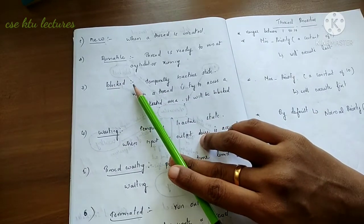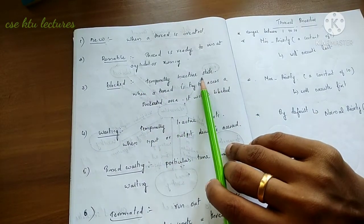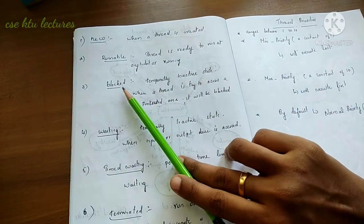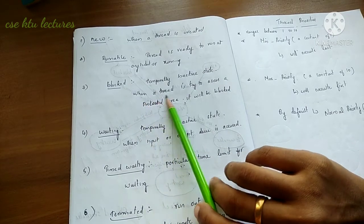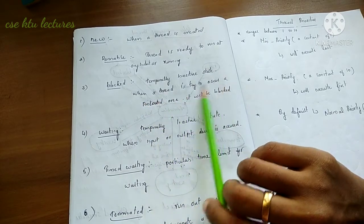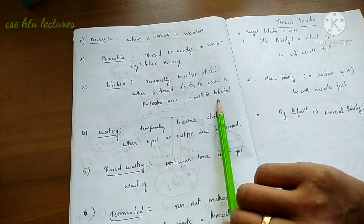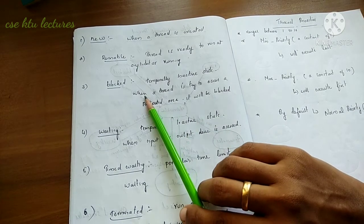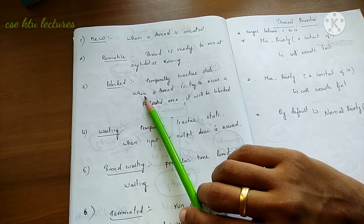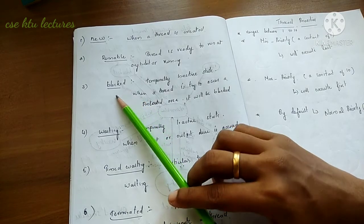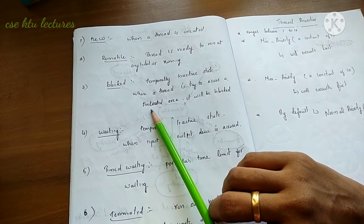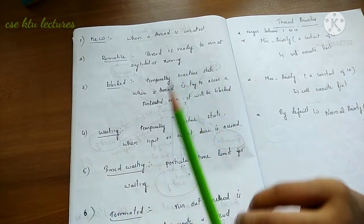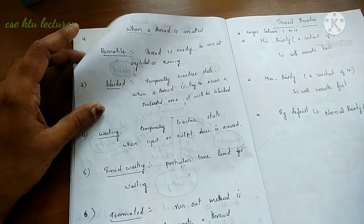The Blocked state is a temporarily inactive state. If a thread is in the Blocked state, it means the thread has tried to access a protected area. It will be blocked until it gets permission to enter that protected area. It enters the Blocked state and remains temporarily inactive for some time.